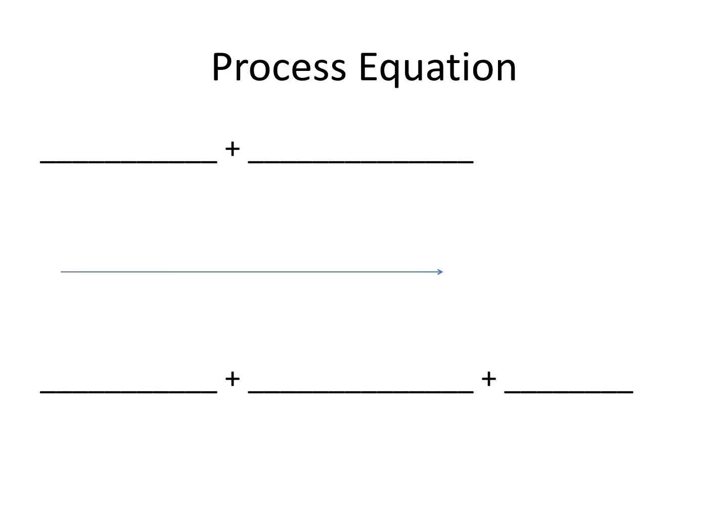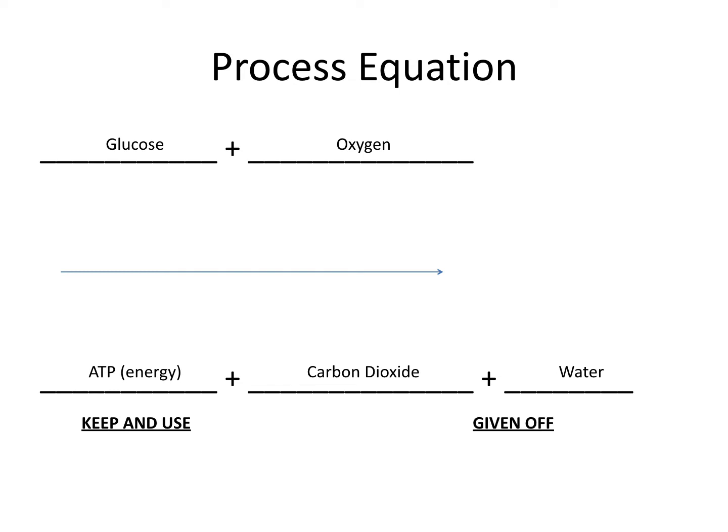There's also a process equation that goes with this. First, you need glucose, which is what plants make in photosynthesis. You have to take in oxygen. Then you will make ATP, which is energy — there's a really big word that ATP stands for, but in sixth grade you need to know ATP. You let out carbon dioxide and water. You keep and use that ATP — any living thing does — to move, grow, keep warm, etc., and you give off the carbon dioxide and water. People think cellular respiration is just breathing because you breathe in oxygen and breathe out carbon dioxide, but you can see from the process there's a little bit more than just that.